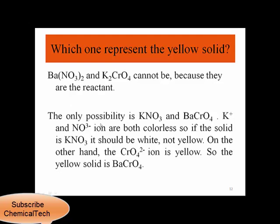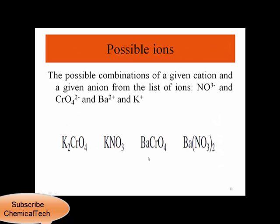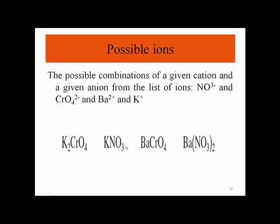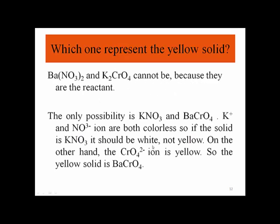The only possible precipitate is either KNO₃ or barium chromate. Potassium and nitrate ions are both colorless, so if KNO₃ were the solid it would be white, not yellow. On the other hand, the chromate ion is yellow. So the yellow solid must be barium chromate. We can conclude that barium chromate is the precipitate, since the chromate ion is yellow and the yellow solid we observe is barium chromate.